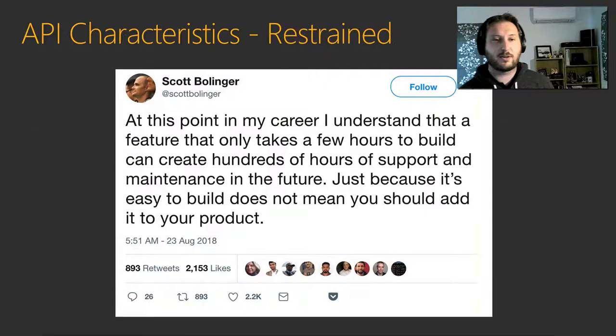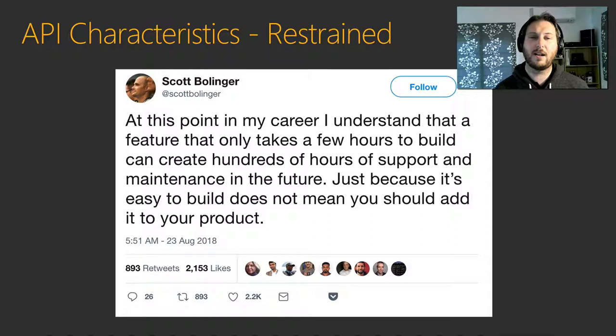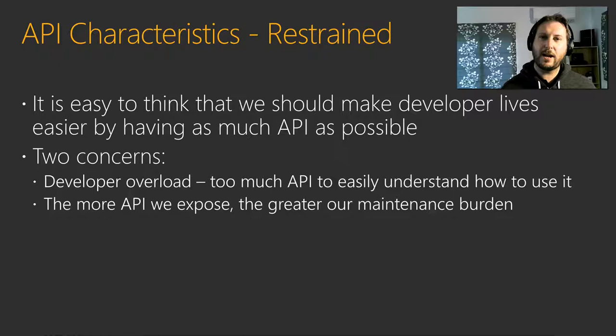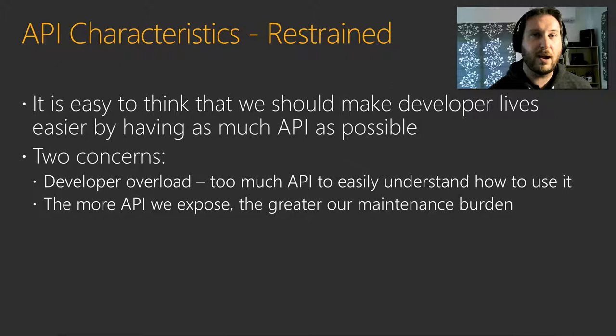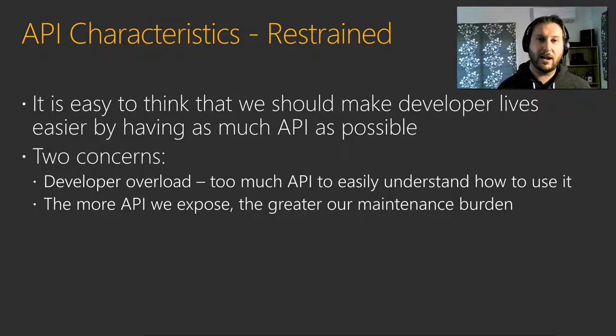The next topic is restraint. As Scott Bollinger said in 2018: 'At this point in my career, I understand that a feature that only takes a few hours to build can create hundreds of hours of support and maintenance in the future. Just because it's easy to build does not mean you should add it to your product.' As API designers, it's so easy to make API — we can sit down right now and write public void methods and suddenly we've got three more APIs. API is cheap and easy to add, but it's costly to support over the long term. API has to pay its own way.